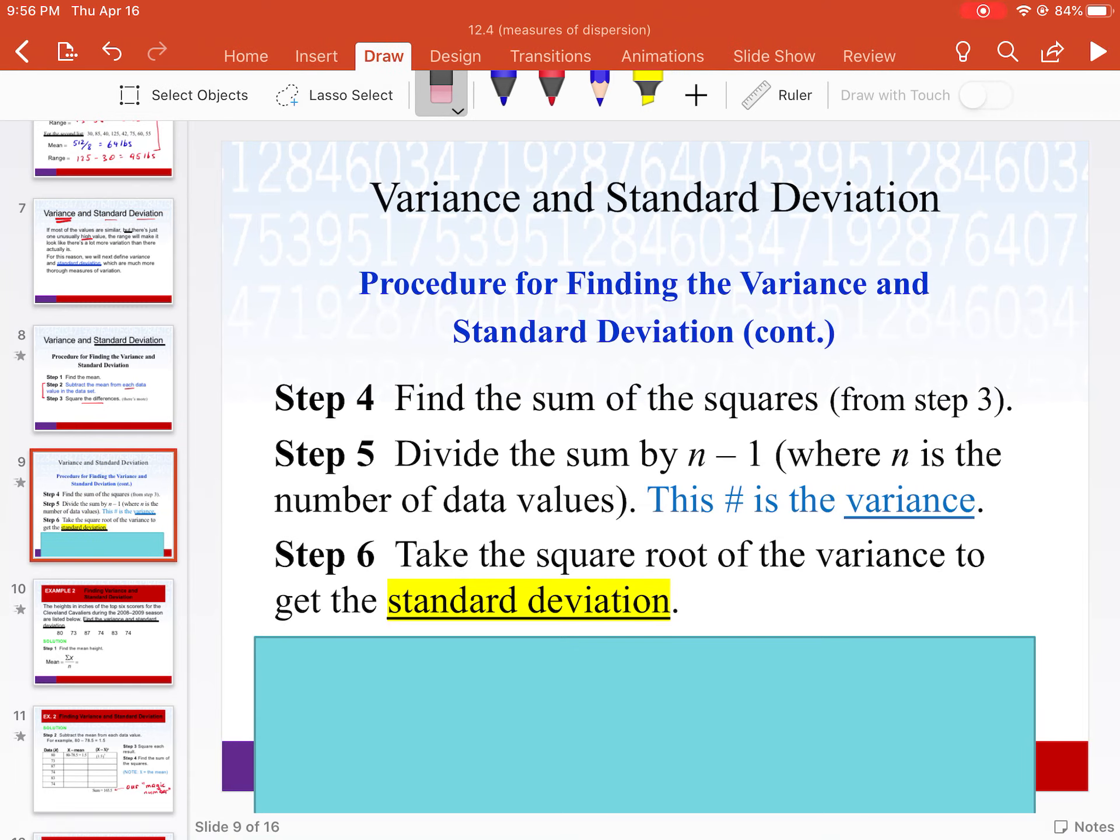Steps five and six are the last two. Number five is we divide that sum that we just found by n minus 1. Remember I told you that n in statistics is always the number of data values. In a stats class you would go over why n minus 1, but in this class just remember divide by n minus 1. Now to offset the fact that you squared everything back in step three, we take the square root and that gives us the standard deviation.